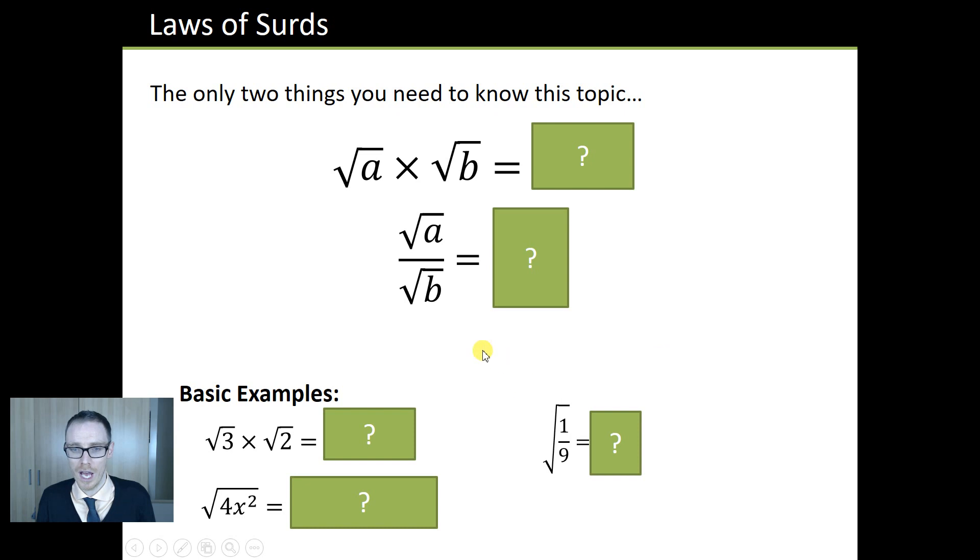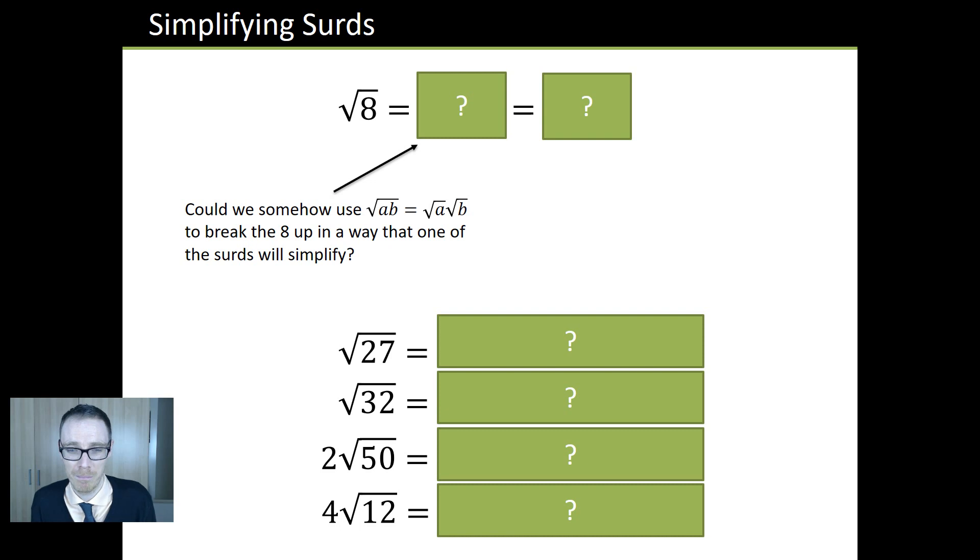And then we get on to the rules of surds, very simple. If you haven't used Frosty before, you won't be familiar with these green boxes. Basically, they're just a little bit of simple animation and it just means that you can hide and reveal things really nicely throughout it. And that's going to really come into play in a minute or so.